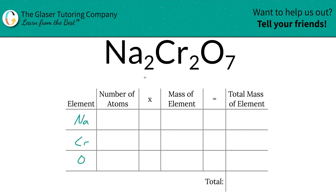Next is to write down the number of atoms of each, and that's where the subscripts come into play. So the subscript of sodium is 2. That means there's 2 sodium, 2 chromium, and therefore 7 oxygen.